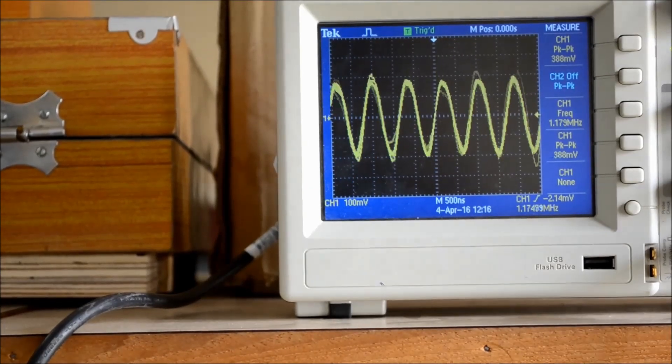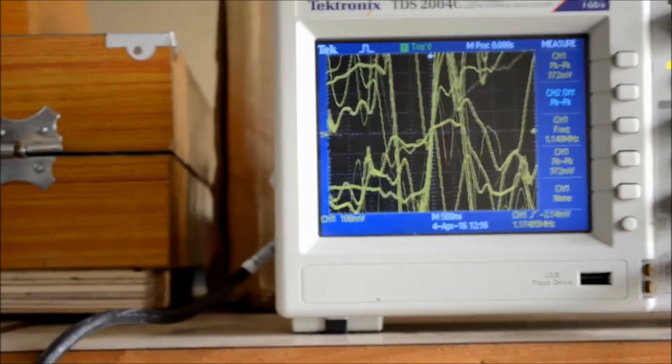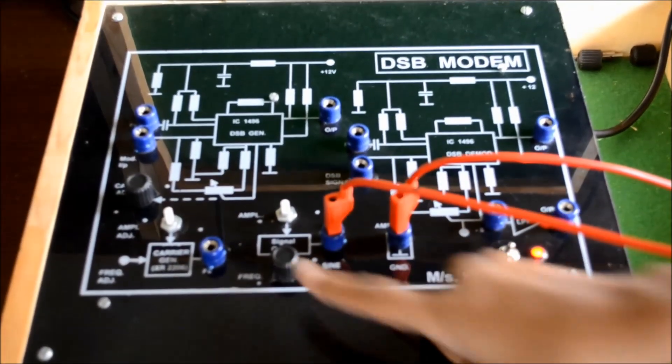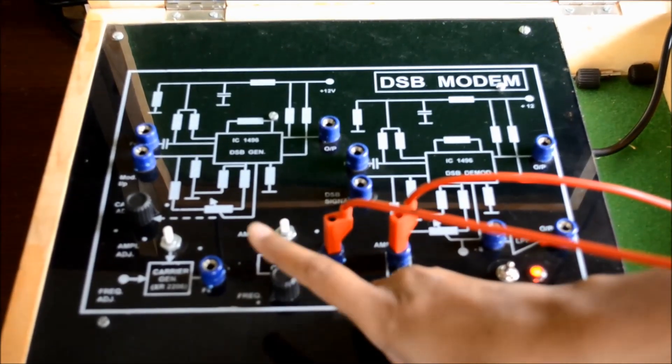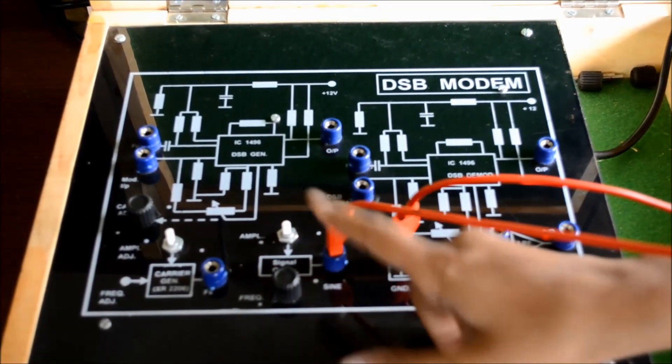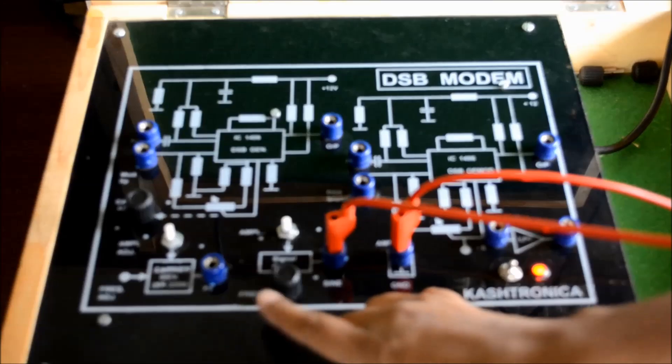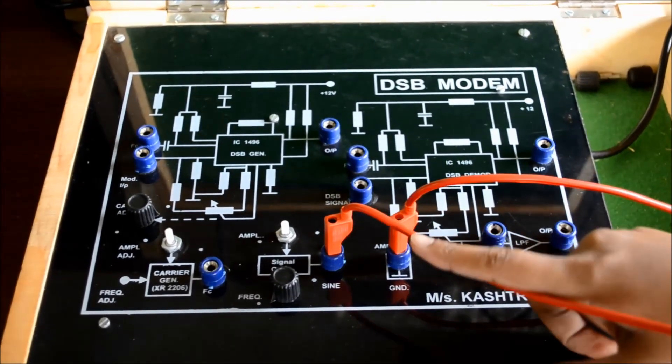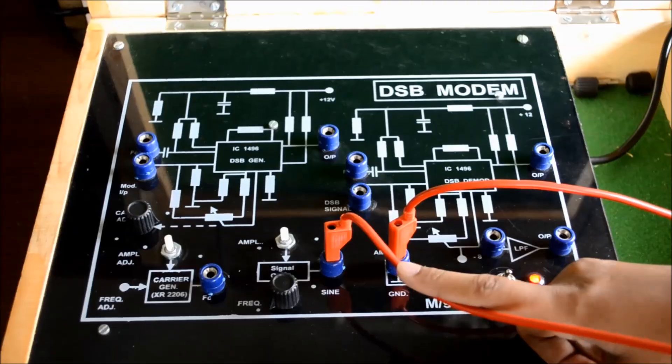Now we are going to check the amplitude of the modulating signal using this signal generator. The signal generator will generate the modulating signal, so just check the amplitude and frequency of this modulating signal.